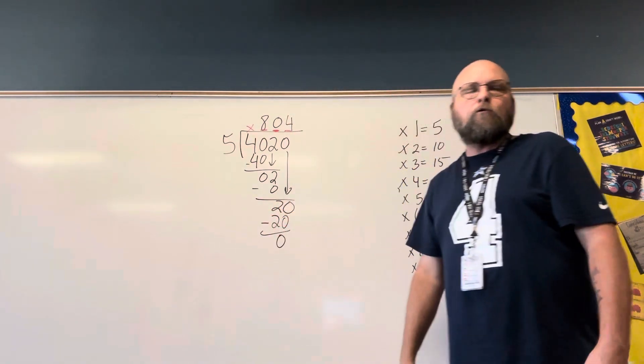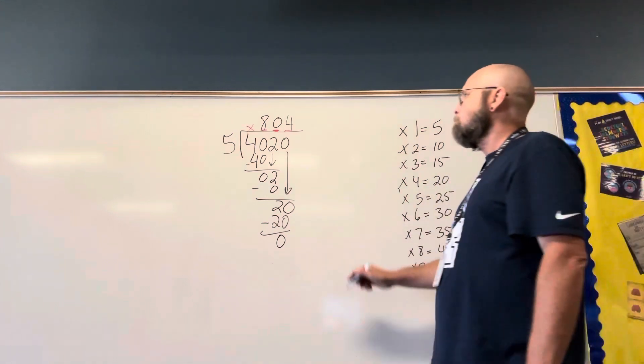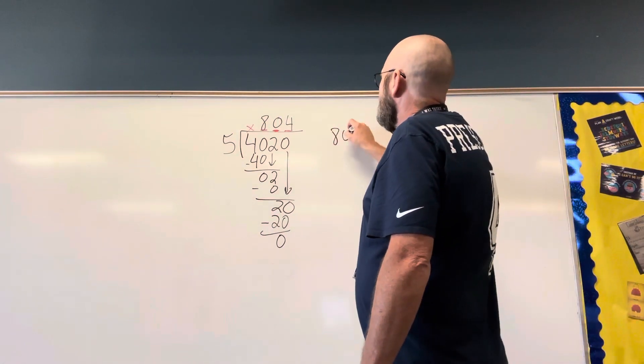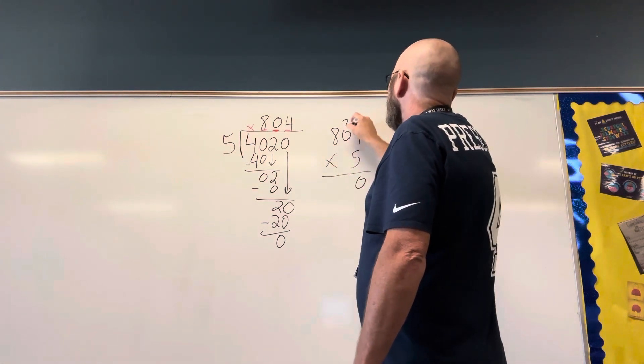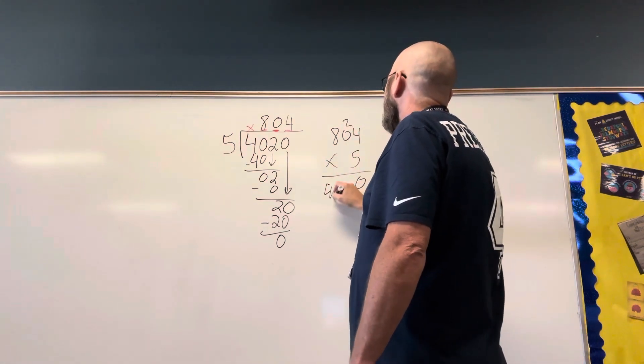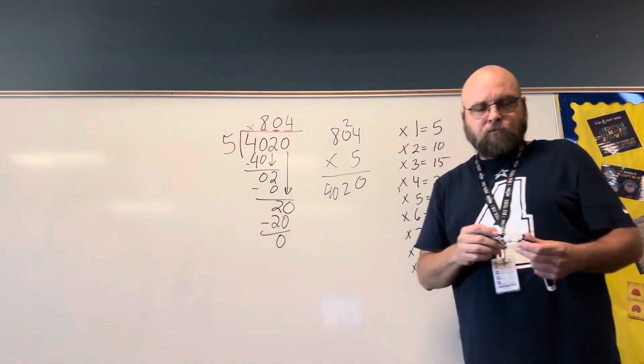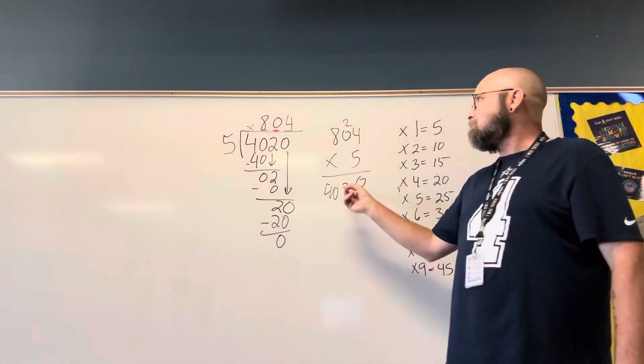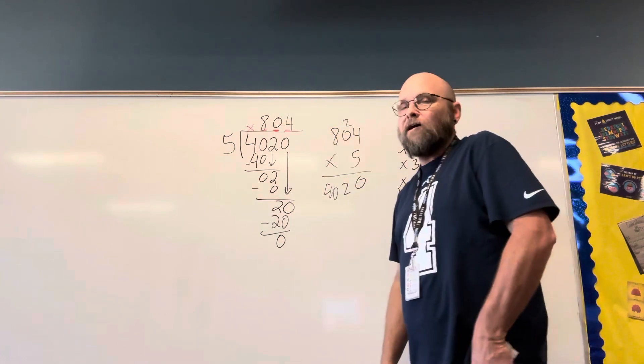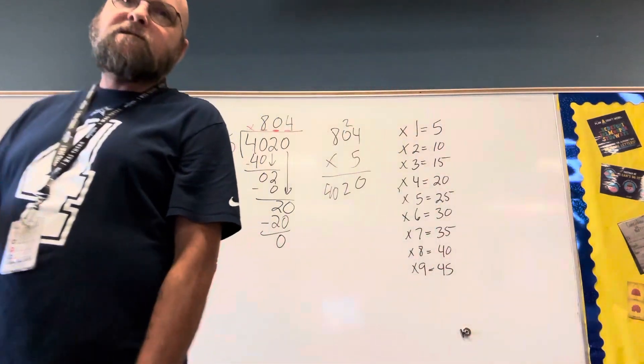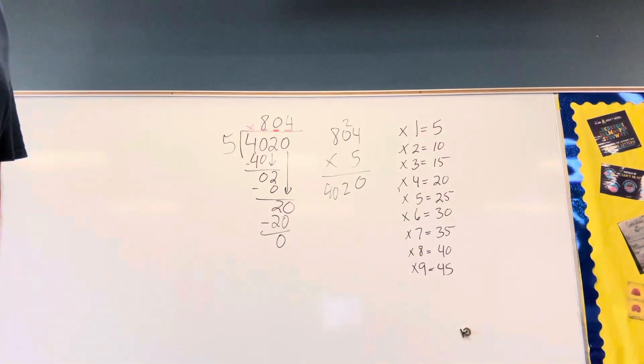And I'm sure before you turned this in, you checked it with multiplication. 804 times 5. And you would get 4,020. You got it wrong. It's probably you didn't check it. You probably put 84 instead of 804. That's my guess anyway, based on my 30 years of experience. Do it right.